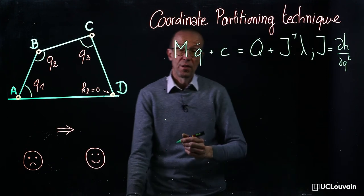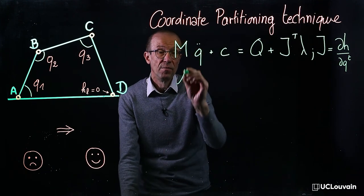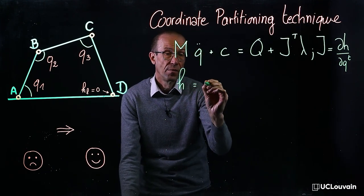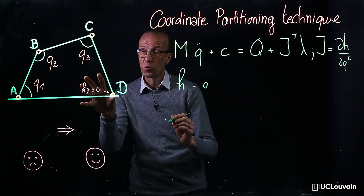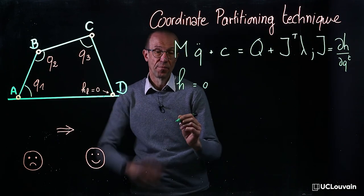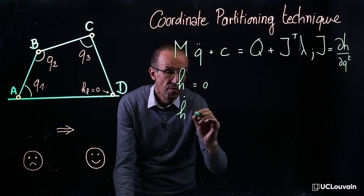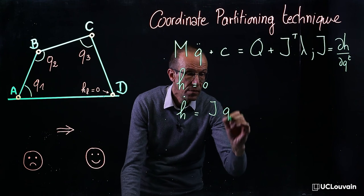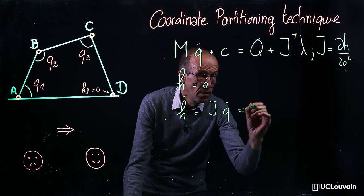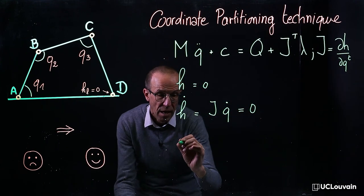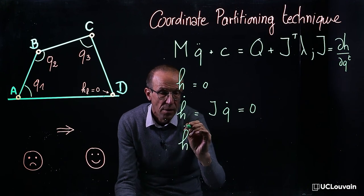You also have the constraints themselves—for instance, the loop constraints for the four-bar mechanism—the constraints at velocity level and at acceleration level.